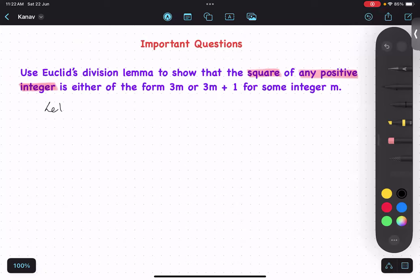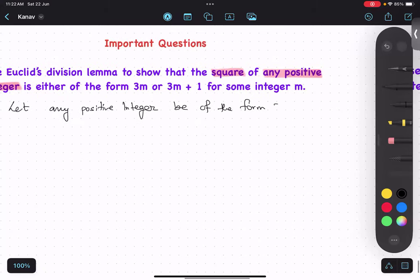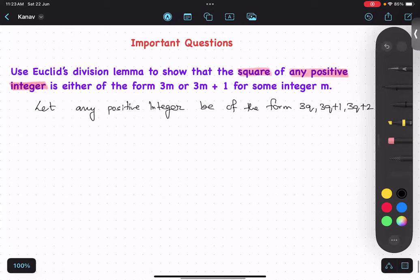So let any positive integer be of the form 3Q, 3Q plus 1, 3Q plus 2. Yes or no? Yes. Now again, we have three cases. Any positive integer N, let any positive integer N be of the form 3Q, 3Q plus 1, 3Q plus 2.